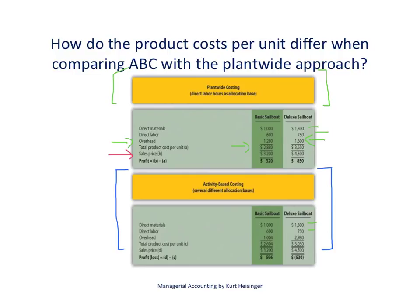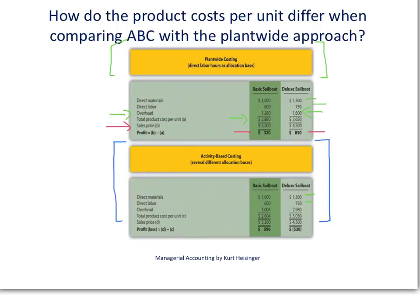As a result, our profit according to our records using this plant-wide costing approach was $320 for the basic sailboat and $850 per unit for the deluxe sailboat. To continue to build this example, let's assume that management, based on our plant-wide costing information, decided to push the sales of the deluxe sailboat because the profits of the deluxe sailboat at $850 per unit are clearly higher than the profit for the basic sailboat of $320 per unit.